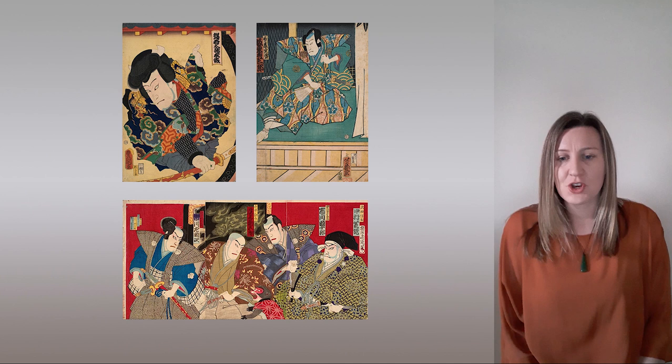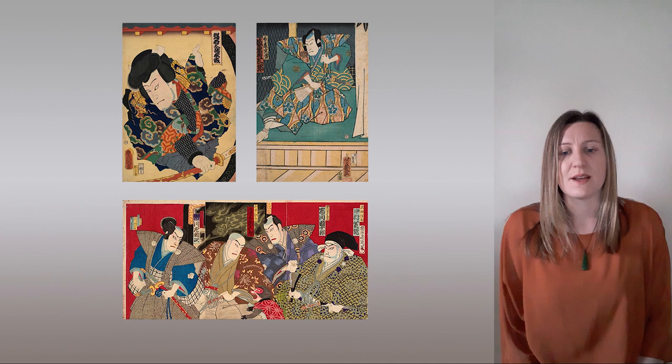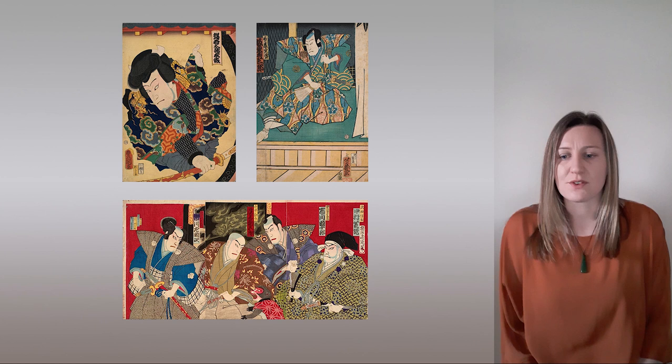Ukiyo-e translates to 'pictures of the floating world.' This floating world concept relates to the ephemeral pleasures of everyday life. Above all, they focus on urban people and places of amusement such as the theatre and pleasure quarters.